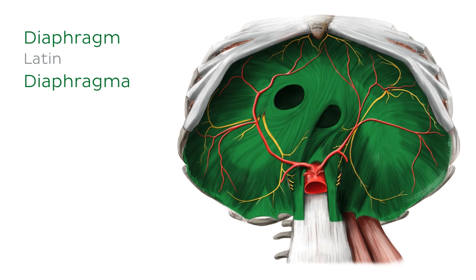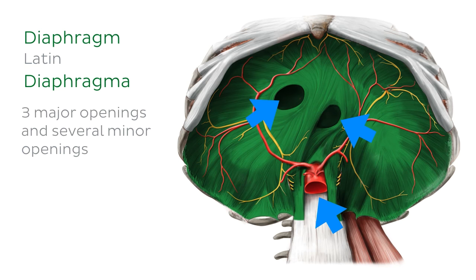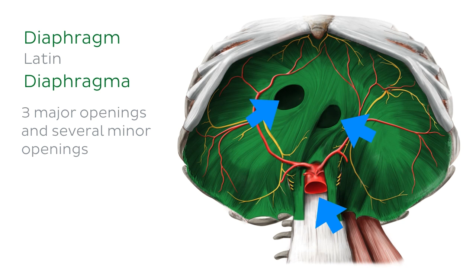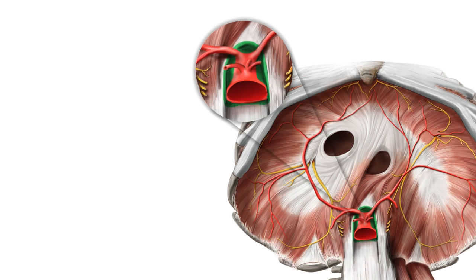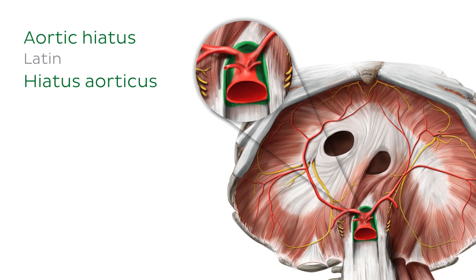The diaphragm has several openings, which allow structures to pass between the thoracic and abdominal cavities. It has three major openings and several minor openings. In this tutorial, we're going to talk about the major openings and the associated structures that pass through them. The major openings are named after the larger structures that run through them, and the first one we'll talk about is the aortic hiatus.